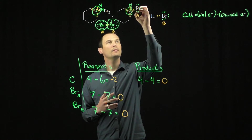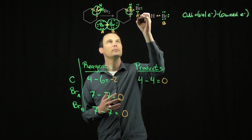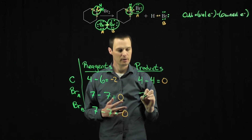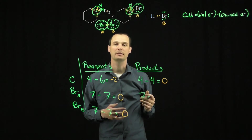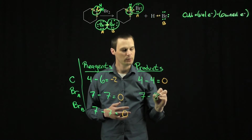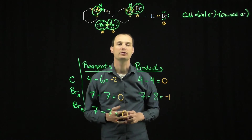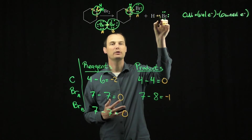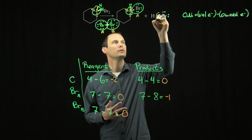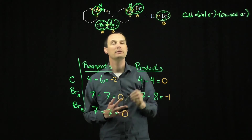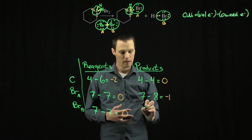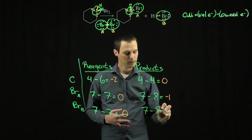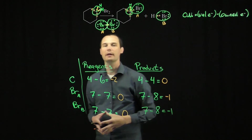Bromine A owns both of the electrons in the carbon-bromine bond and all of the lone pairs. It wants seven electrons in its neutral ground state configuration, and now it owns eight. Bromine A is now at the negative one oxidation state. The bromine in the HBr byproduct owns both electrons in the hydrogen-bromine bond, since bromine is more electronegative than hydrogen, plus all of the lone pairs — so it also owns eight electrons and is at the negative one oxidation level.